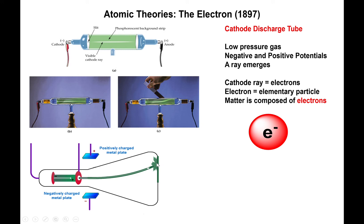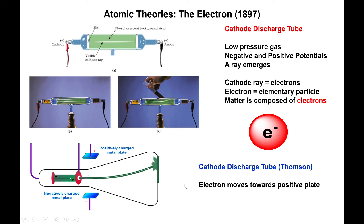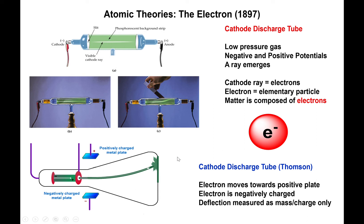By looking at the deviation — where the electron struck on the detector compared to where it should have been — you could determine how much charge the electron carries. The electron moves toward the positive plate, confirming it is negatively charged. However, the most you could get from this particular experiment was the mass-to-charge ratio. That number — the ratio of the mass per charge of the electron — is what Thomson obtained.